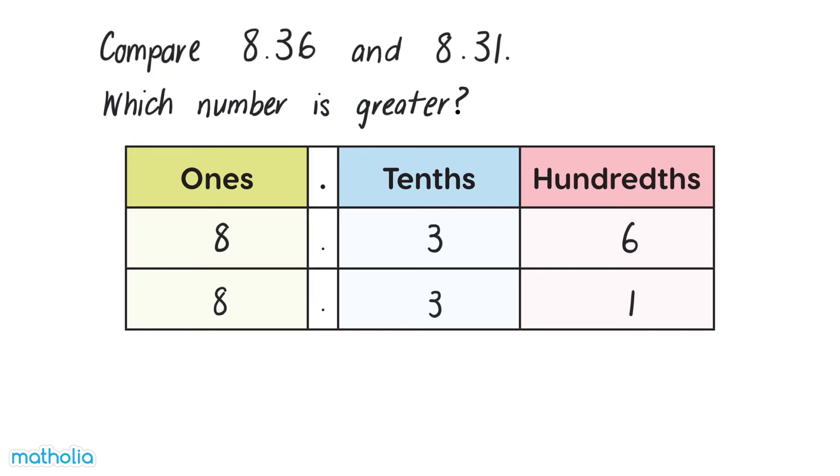The values in the ones place and the tenths place are the same. Move on to compare the digits in the hundredths place. Six hundredths is greater than one hundredth, so 8.36 is greater than 8.31.